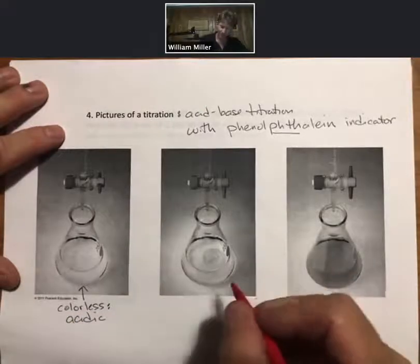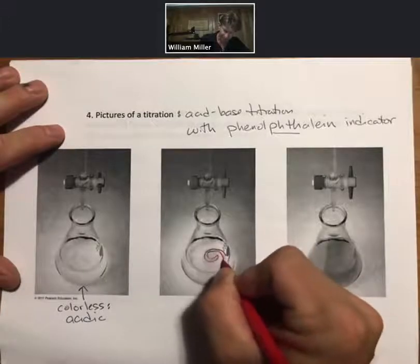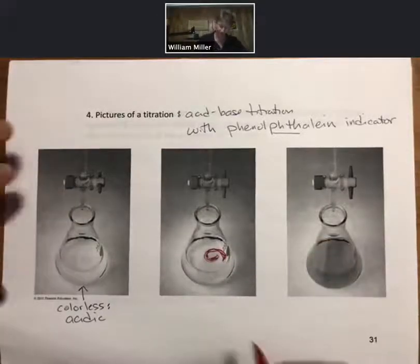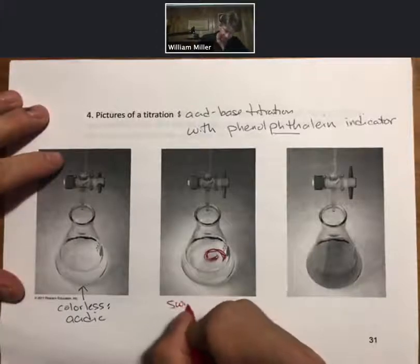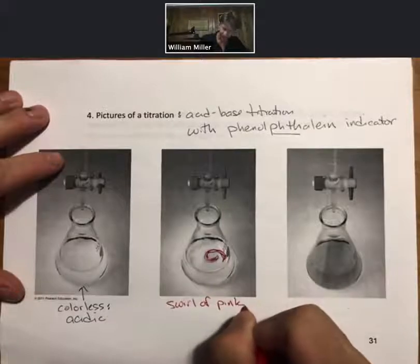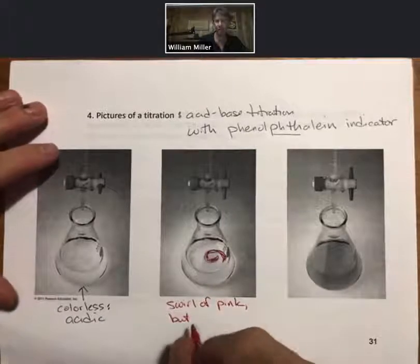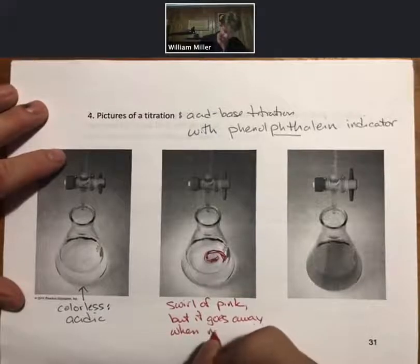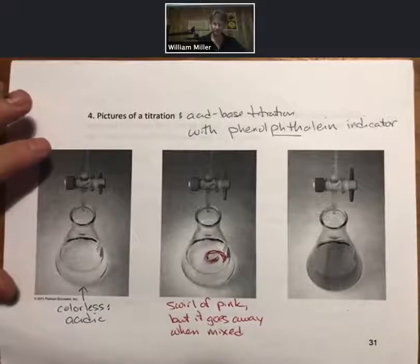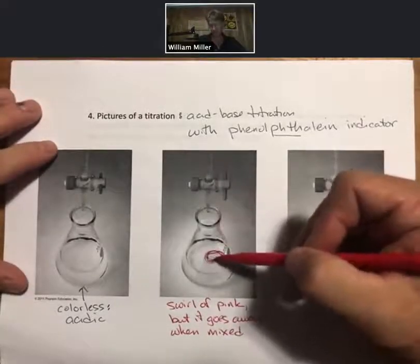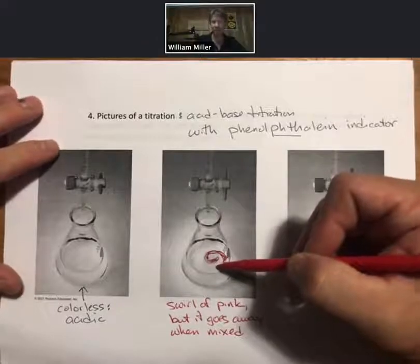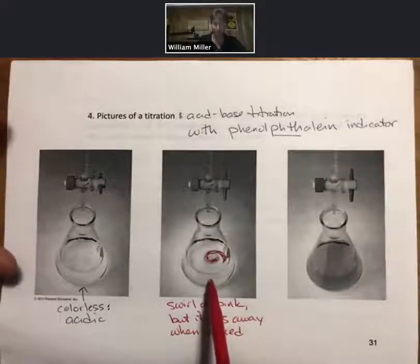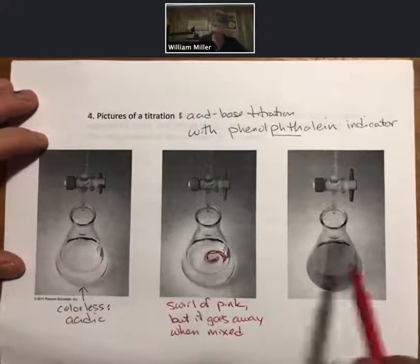I've got my red here for my pink. There's a little swirl of pink here. But when you swirl the solution, when you continue to swirl the solution, it goes away when mixed. Because you're putting sodium hydroxide into this solution, so of course it's going to turn pink transiently in the middle. But in the end, your solution in a titration is always, when it's properly mixed, will either be completely colorless or completely pink.